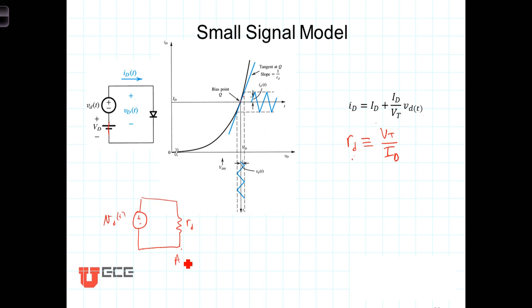This gives us the AC component. And once again, the total response will be the DC bias part plus this AC component that we would derive.